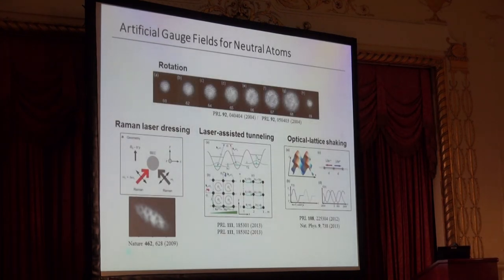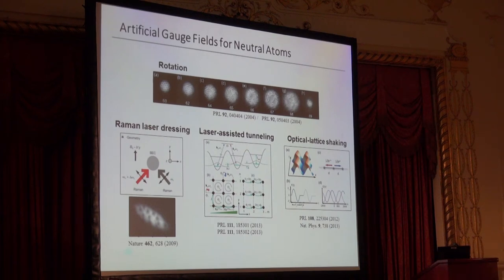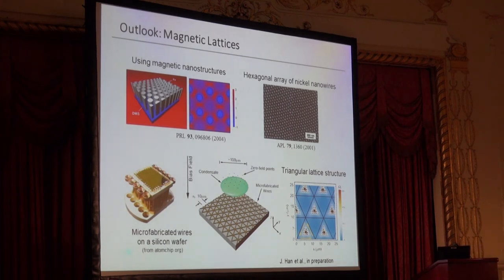Finally, a natural next question: can we use this mechanism — using real atomic spin textures — as an alternative way to generate gauge fields for quantum gas experiments? Generating artificial gauge fields is a very hot topic, with wonderful demonstrations using Raman laser dressing, laser-assisted tunneling, and optical lattice shaking. However, to approach a strong flux regime, we would need high-density skyrmion lattice spin textures, possibly using magnetic nanostructures or atom technology.